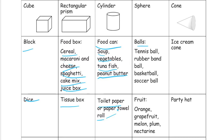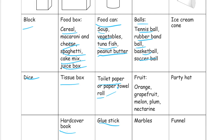For spheres, any kind of ball like a tennis ball, a rubber band ball, a basketball, or a soccer ball. Some pieces of fruit like oranges, grapefruit, and some melons are spheres — a watermelon is usually not a sphere, but small ones can be pretty close. Plums and nectarines are spheres.